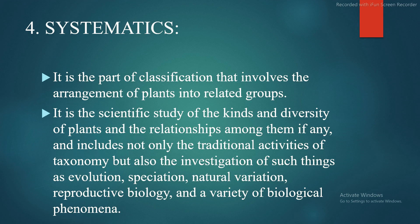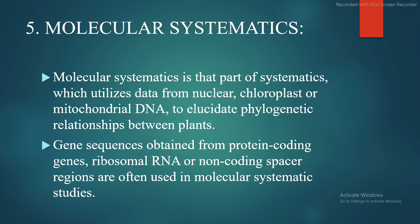Fourth is systematics. It is the part of classification that involves arrangement of plants into related groups. It is the scientific study of the kinds and diversity of plants and the relationships among them, including not only the traditional activities of taxonomy but also the investigation of evolution, speciation, natural variation, reproductive biology, and other biological phenomena. Molecular systematics is that part which utilizes data from nuclear, chloroplast, and mitochondrial DNA to elucidate phylogenetic relationships between plants. Gene sequences from protein-coding genes, ribosomal RNA, or non-coding spacer regions are often used in molecular systematic studies.